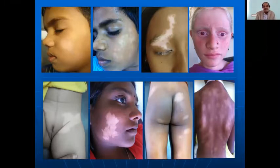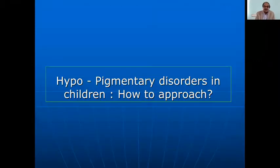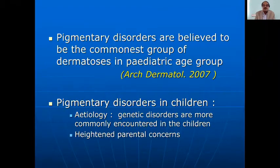This is how children with different hypopigmented patches come to you. Of course, they look almost similar — some may look like vitiligo. Invariably, parents want you to tell them it is not vitiligo; that is the parental anxiety. So how to approach hypopigmented disorders in children would be the first topic.